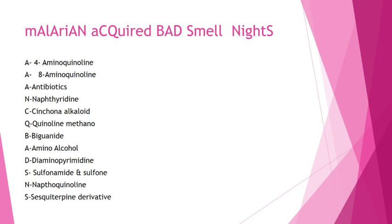In ACQUIRED: C stands for cinchona alkaloid, Q stands for quinoline methanol. In BAD: B stands for biguanide, A stands for amino alcohol, D stands for diaminopyrimidine. S is sulfonamide and sulfone. In NIGHTS: N stands for naphthyridine, S stands for sesquiterpene derivatives. That completes the 12 classes.